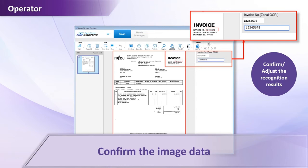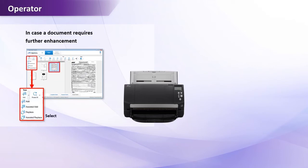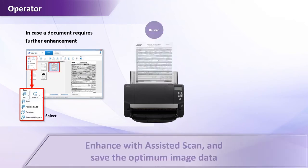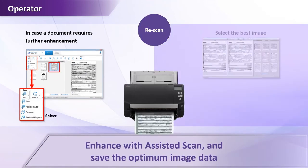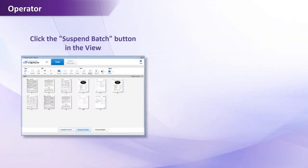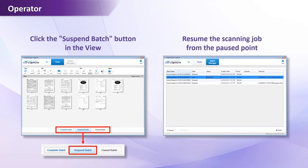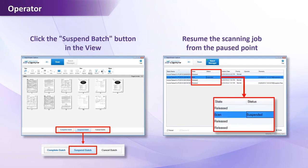The PaperStream Capture application seamlessly integrates the scanner driver PaperStream IP. This includes Assisted Scan, allowing image data to be corrected quickly and easily. You can pause scanning and then resume scanning routines later, allowing operators to start a new batch while suspending the current one, maintaining high production-level efficiency throughout the day.